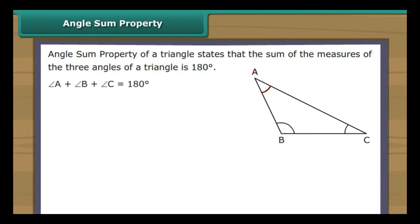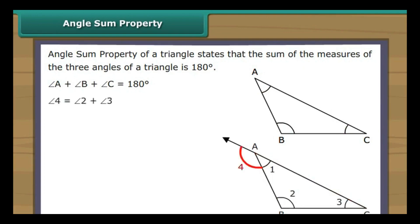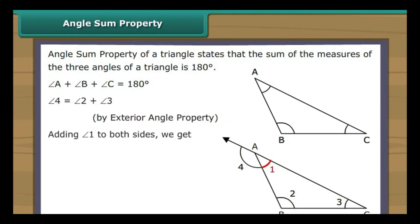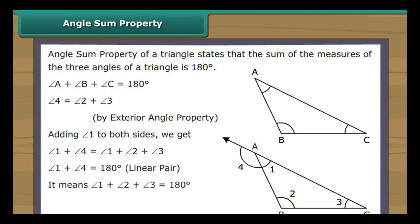In the figure, angle A plus angle B plus angle C equals 180 degrees. To prove this, we use the exterior angle property: angle 4 equals angle 2 plus angle 3. Adding angle 1 to both sides gives angle 1 plus angle 4 equals angle 1 plus angle 2 plus angle 3. Since angle 1 plus angle 4 equals 180 degrees (linear pair), therefore angle 1 plus angle 2 plus angle 3 equals 180 degrees — the sum of the three angles of a triangle is 180 degrees.